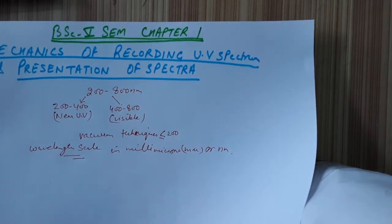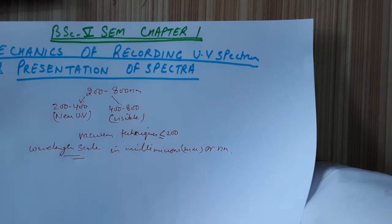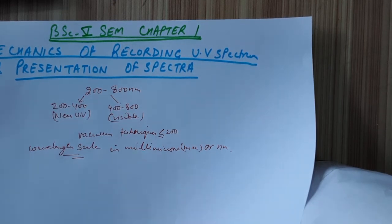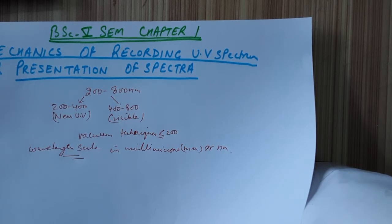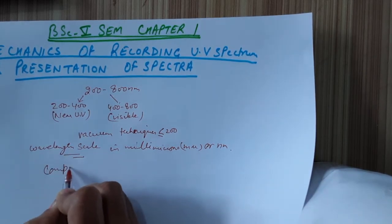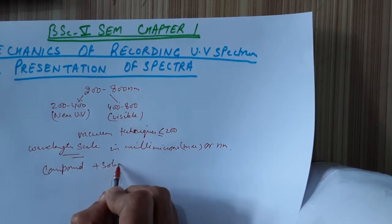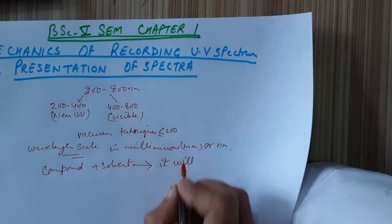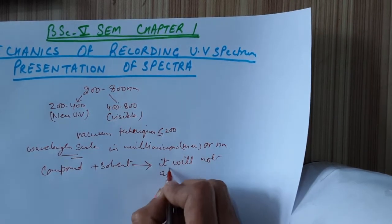Now, what is the procedure to record the spectra? The compound which is to be studied will be dissolved in a solvent. That solvent should be such that it will not show any absorption in the range being studied.